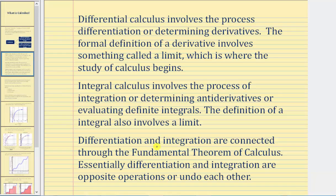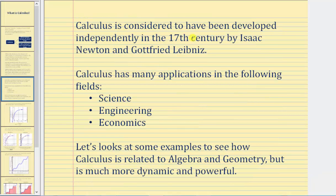Differentiation and integration are connected through the fundamental theorem of calculus. Essentially, differentiation and integration are opposite operations — they undo each other. Calculus is considered to have been developed independently in the seventeenth century by Isaac Newton and Gottfried Leibniz. It's generally accepted they developed it independently at the same time.